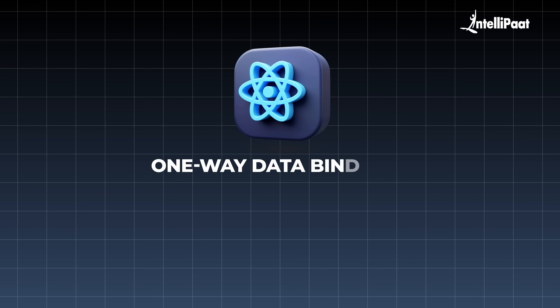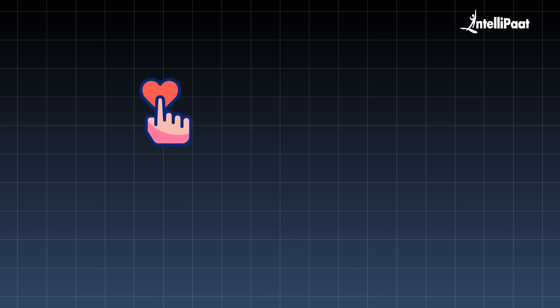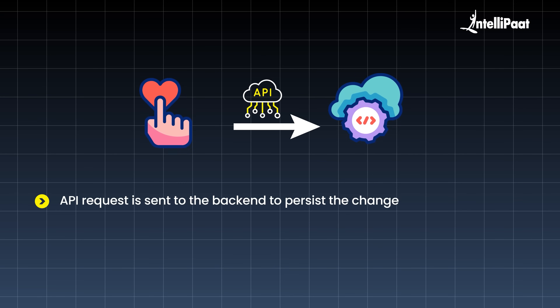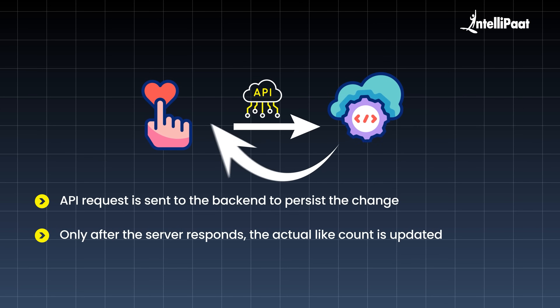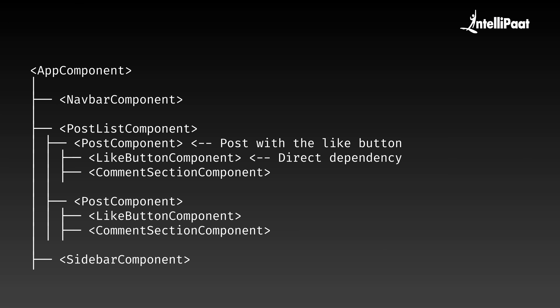React, on the other hand, follows one-way data binding, meaning data flows in a single direction. Using the same Instagram example, when a user clicks the like button, the UI instantly updates the like count to simulate an immediate response. However, this update is not yet saved to the database — instead, an API request is sent to the back-end to persist the change, and only after the server response is the actual like count updated. Unlike Angular, React's virtual DOM pinpoints exactly where the change happened, so instead of re-rendering the entire post component, it only updates the like button component, making it more efficient.